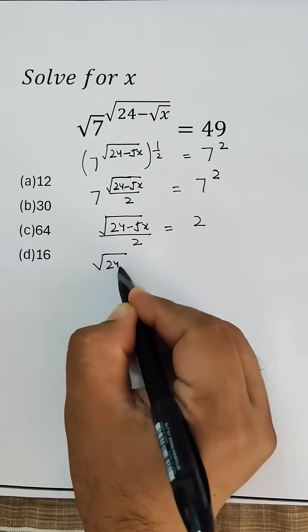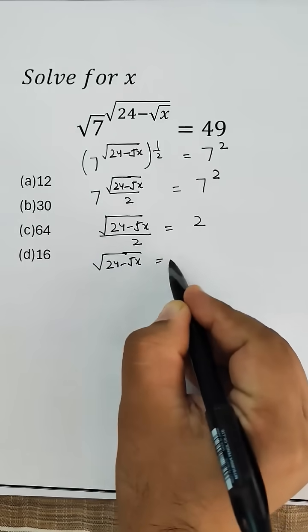Further, square root of 24 minus root x equals 2 times 2, which is 4.